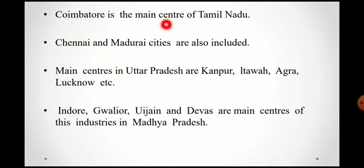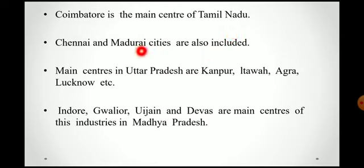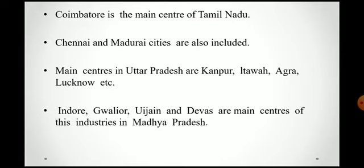Coimbatore is the main center of Tamil Nadu — it is the main centre in the south for cotton textile industry. Chennai and Madurai cities are also included in Tamil Nadu as main cities for cotton textile industries. The main centres in Uttar Pradesh are Kanpur, Ittwa, Agra and Lucknow, making them the main centres of cotton textile industries in north and central India.